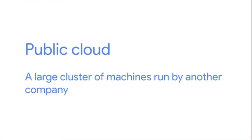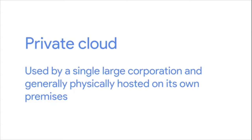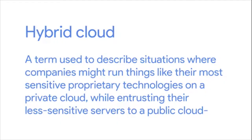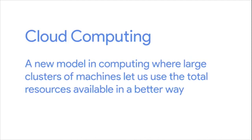What we described is an example of a public cloud — a large cluster of machines run by another company. A private cloud takes the same concepts but is entirely used by a single large corporation and generally physically hosted on its own premises. A hybrid cloud is a term used to describe situations where companies run their most sensitive proprietary technologies on a private cloud, while entrusting less sensitive servers to a public cloud. The cloud is a new model in computing where large clusters of machines let us use total resources in a better way — provisioning a new server in moments and leveraging existing services instead of building your own.